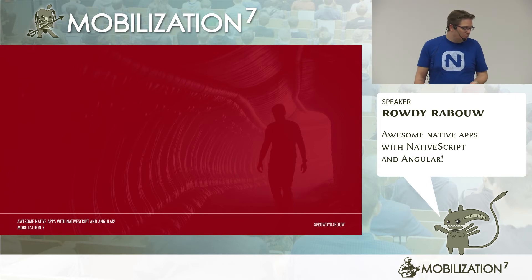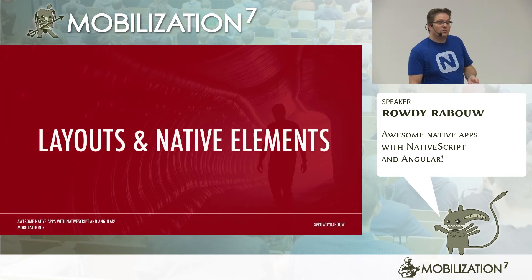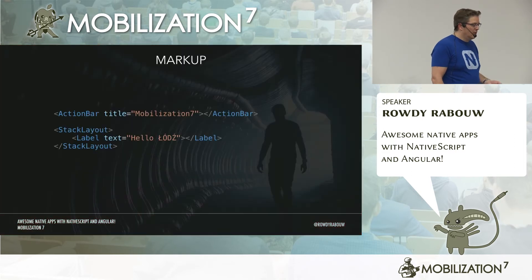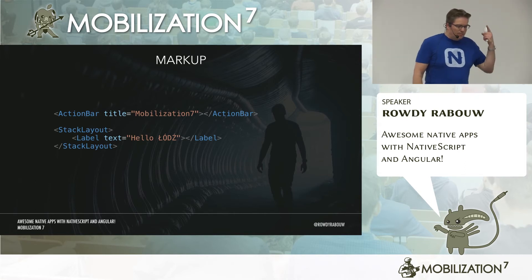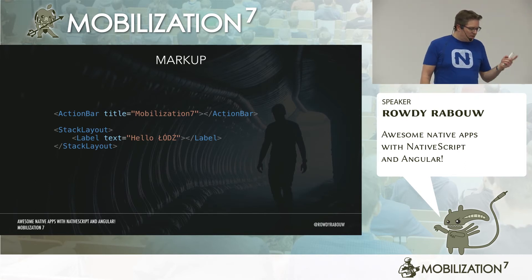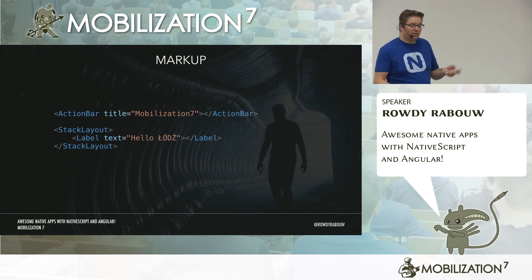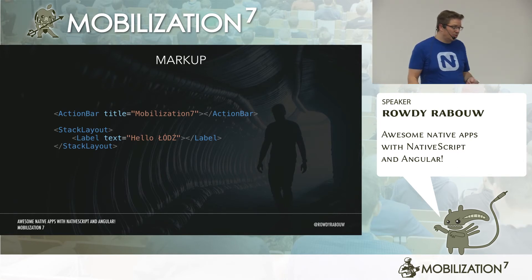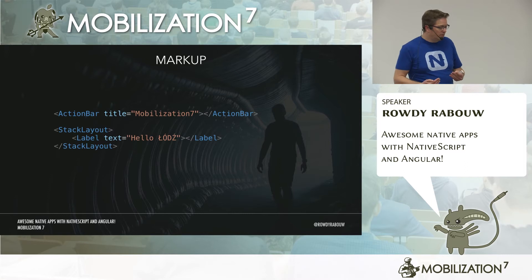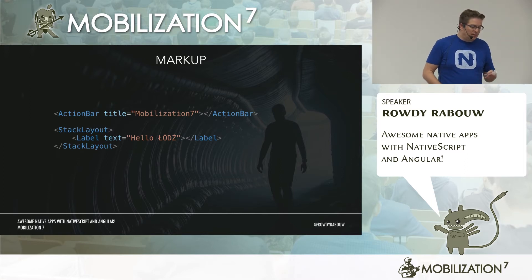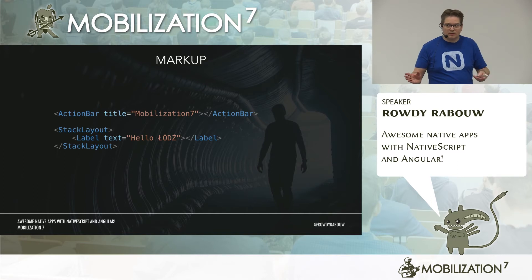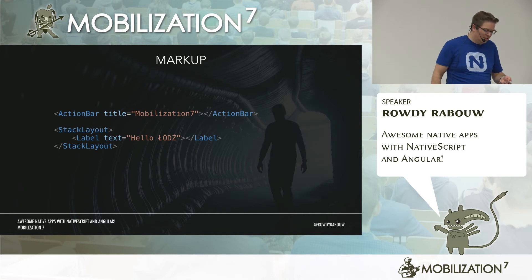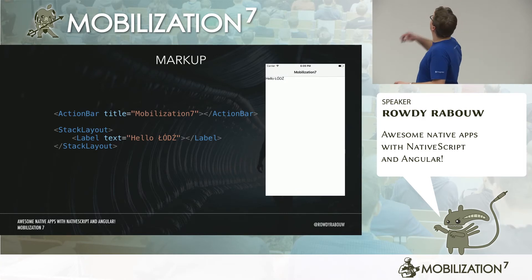Now I want to show you layouts and native elements. We have markup — in this case I define an action bar on top, just as HTML, with a title. Below that I have a stack layout. I just have a text there saying 'Hello.' And you get something like this.